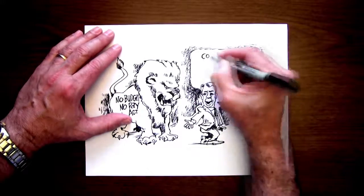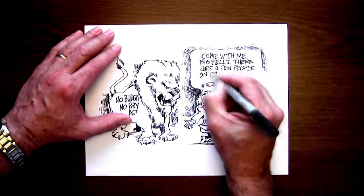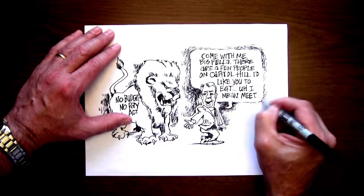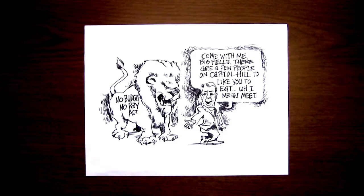And I've got him saying, come with me, big fella. There's a few people on Capitol Hill that I'd like you to eat. I mean, meat. Hmm. I think I was right the first time. That's another pie hole. Shut it.